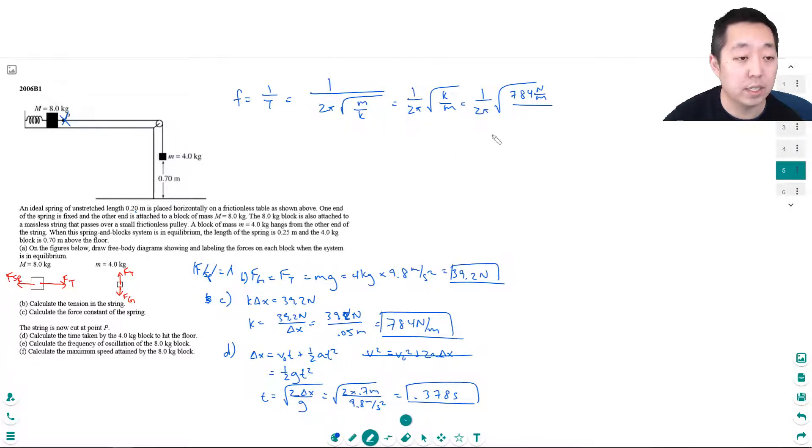So then I do 1 divided by 2 divided by pi, square root of 784 divided by 8.